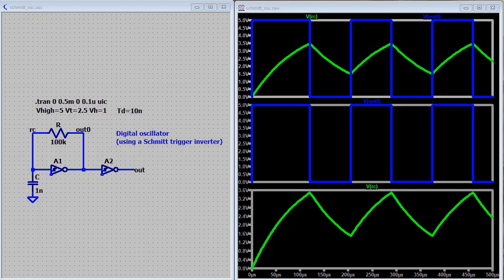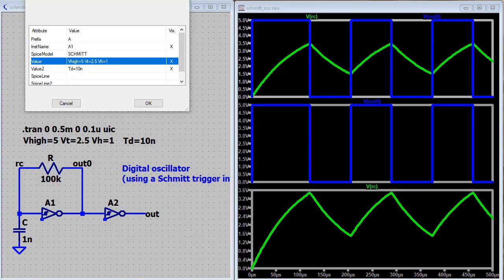With the output low, C discharges toward 0 volts. When the capacitor voltage drops below the negative threshold voltage of the inverter 1.5 volts, the output of the inverter goes high. The cycle repeats. The on-off times are determined by the positive and negative threshold voltages and the RC time constant.